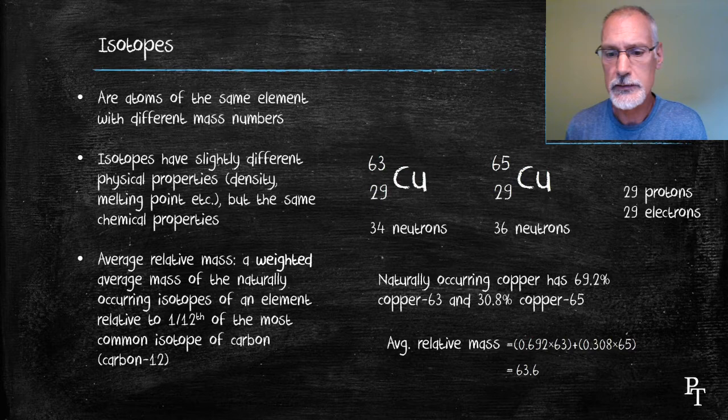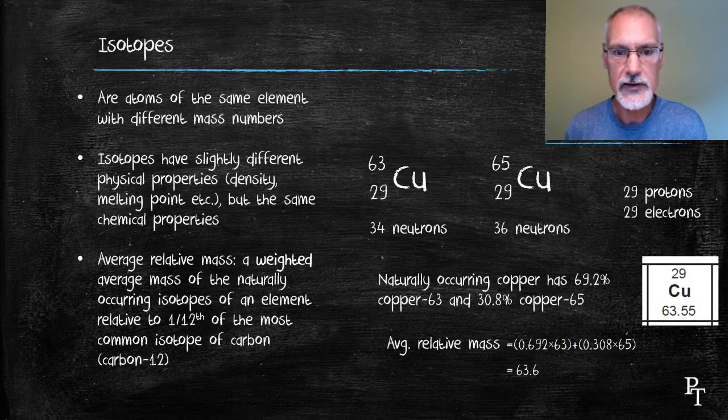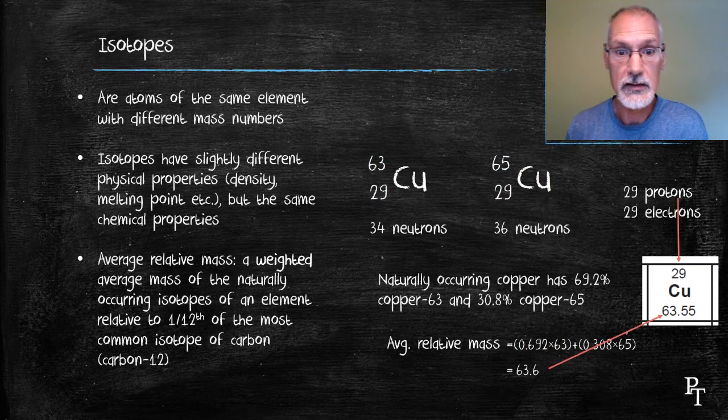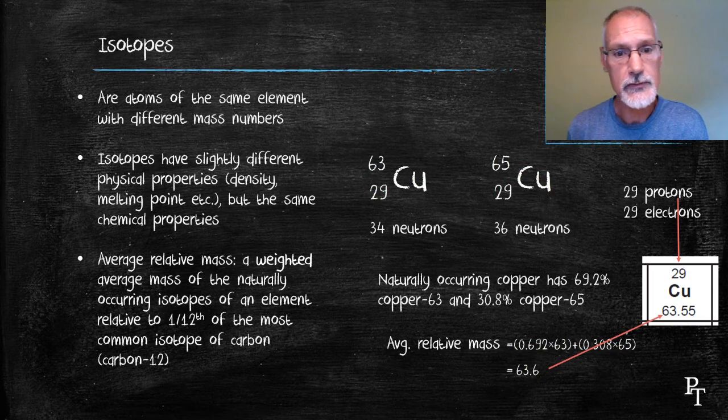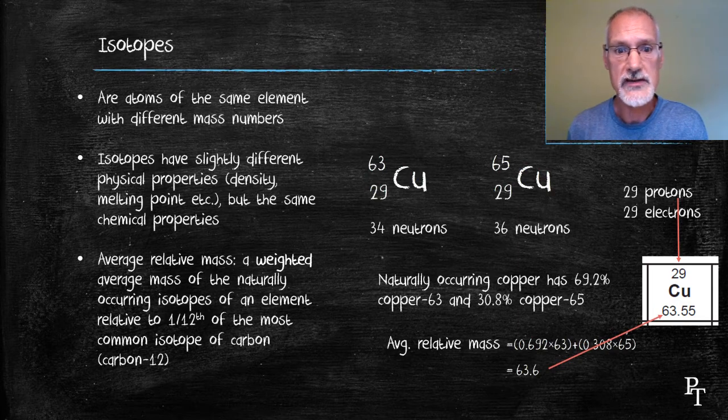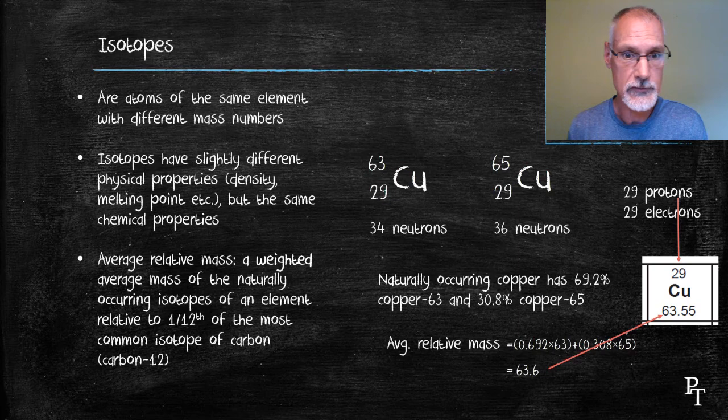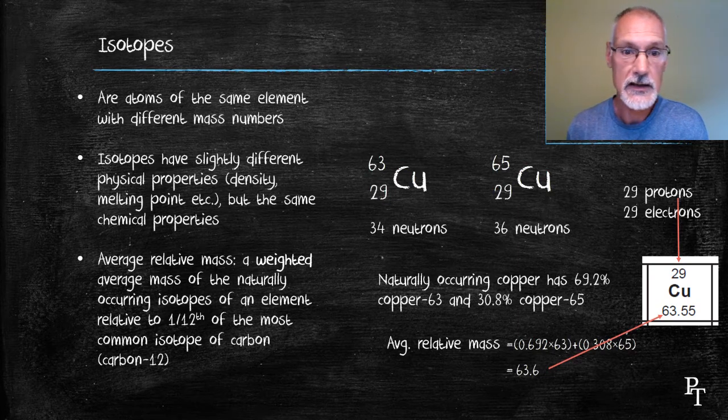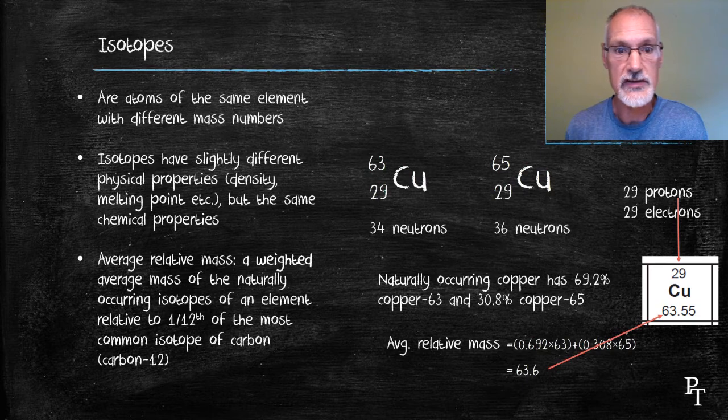When you look at an element in your periodic table, you'll often see the information presented as shown here. The top number, the 29, tells me the number of protons and the number of electrons in a neutral atom. The number that's written beneath copper represents a weighted average of the isotopes of copper. So here, 63.55 just contains more significant digits and used greater accuracy in the percentages that I used in my calculation.